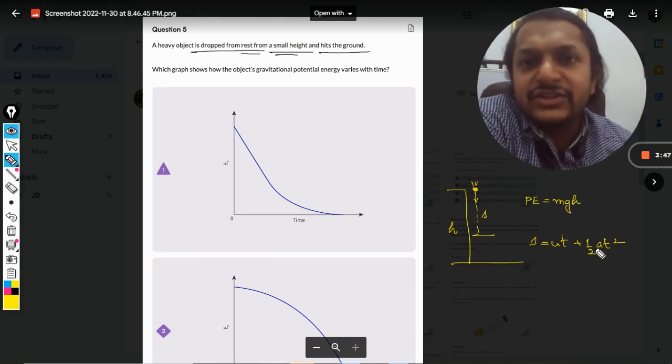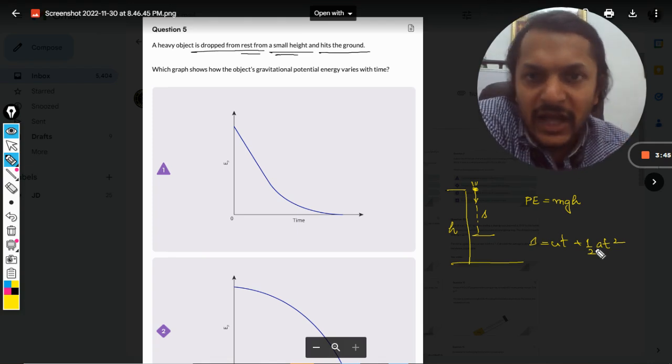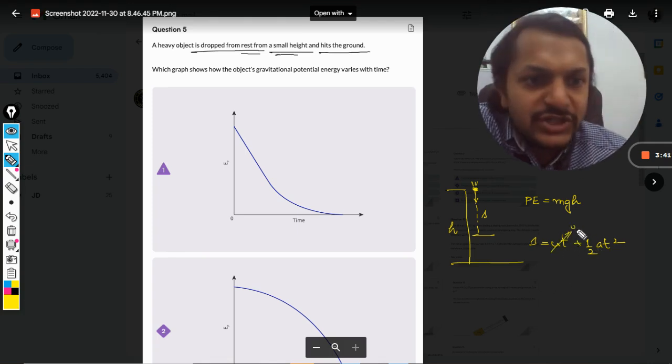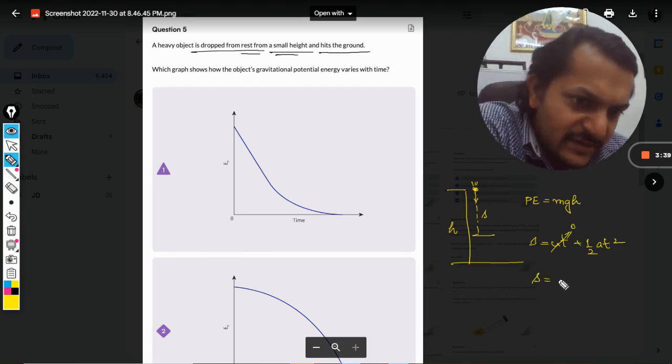Because acceleration is constant, that is 9.8 meters per second squared. And because it is dropped, U is equal to 0. So S will come out to be equal to half into G into T squared.